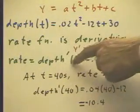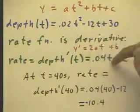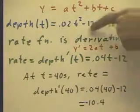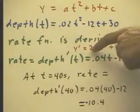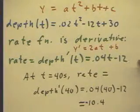We see that rate is the derivative of the depth function, and the derivative of this function is this. Because a is .02, 2a is .04, b is negative 12, so we have b equals negative 12 down here.